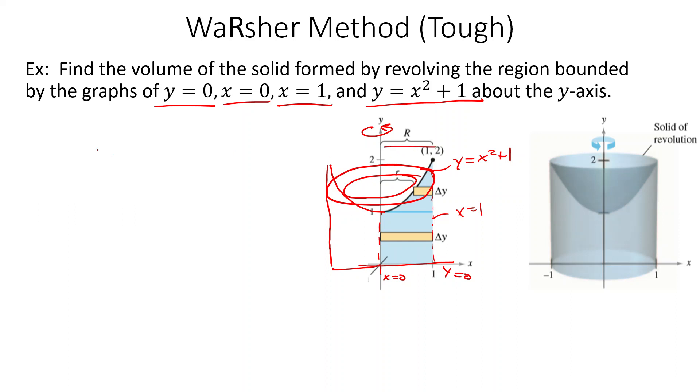So our outer radius here is 1. Our inner radius, it looks like it's just this x distance over. But that x distance is this function right here. So we need to solve for x here. So we get x equals, so we'd subtract 1, y minus 1, and then the square root. So the square root of y minus 1.